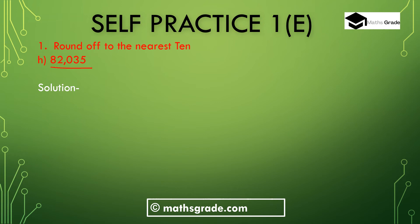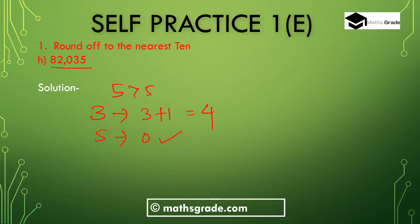Part H: round 82035 to the nearest 10. The unit place digit is 5, which is equal to or more than 5. Add 1 to the 10th place digit: 3 plus 1 is 4. Write 0 in the unit place. The remaining digits 8, 2, and 0 stay as they are. So 82035 rounded to the nearest 10 is 82040.